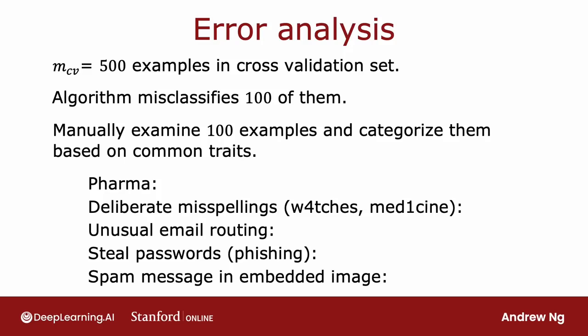Concretely, let's say you have M_CV equals 500 cross-validation examples, and your algorithm misclassifies 100 of these 500 cross-validation examples. The error analysis process refers to manually looking through these 100 examples and trying to gain insights into where the algorithm is going wrong.